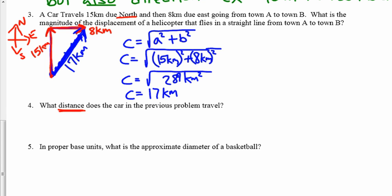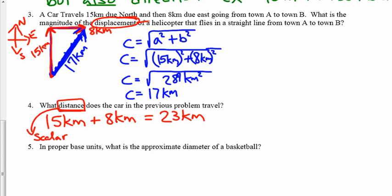But the distance is going to be simply our 15 kilometers plus 8 kilometers, giving us a total of 23 kilometers. It's worth noting here that distance is a scalar, whereas displacement is a vector, because when we talk about displacements, we're referring to not just how far away it is, but also the direction. So be sure to note the difference between distance and displacement.